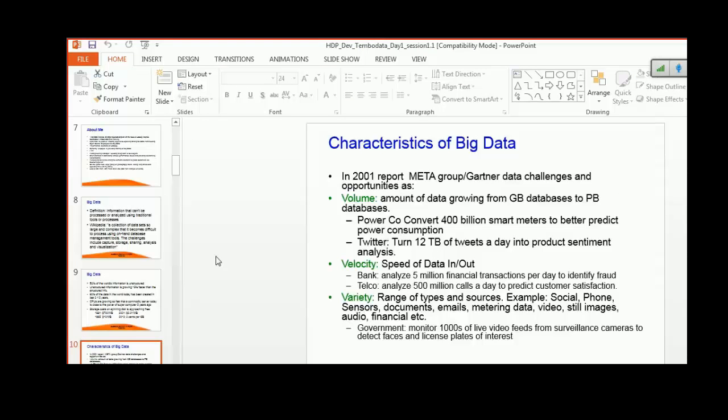Let's talk about the second V, velocity. Velocity refers to the speed at which data is being generated and the speed at which it needs to be made available for processing. For example, a bank analyzes 5 million financial transactions per day to identify fraud.